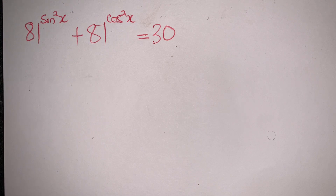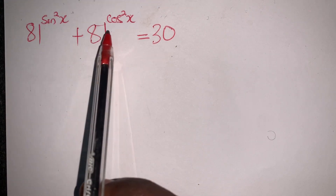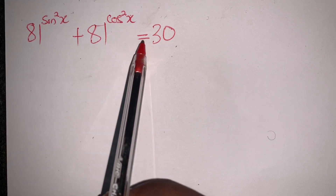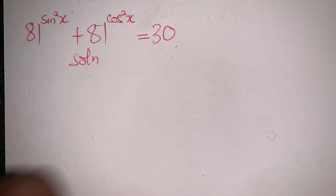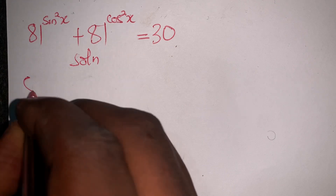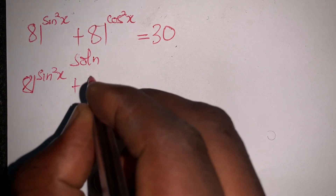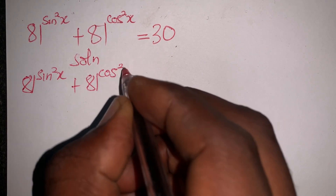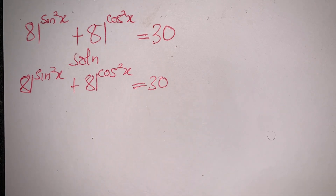Hi, welcome to this channel. Today we have a nice Olympic question — a Chinese Math Olympiad question. The problem is: 81 exponent sin²x plus 81 exponent cos²x is equal to 30.